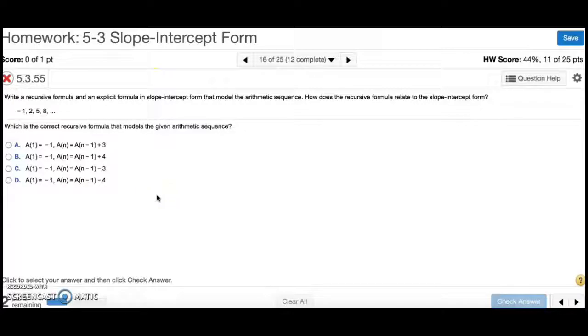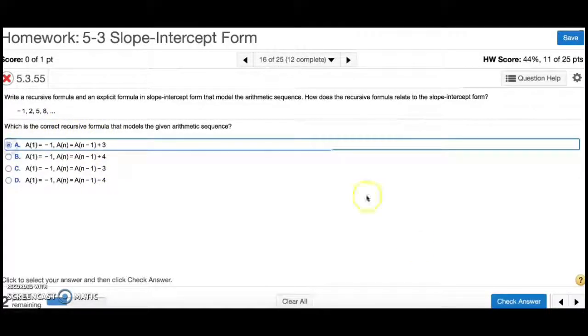Number 16. Write a recursive formula and an explicit formula in slope-intercept form that model the arithmetic sequence. And how does the recursive formula relate to the slope-intercept form? So, the first thing I do is look for the pattern. I'm adding 3 to each number to get the next one. The only one of these where I'm adding a 3 is A. So, that means this will be the formula for it.